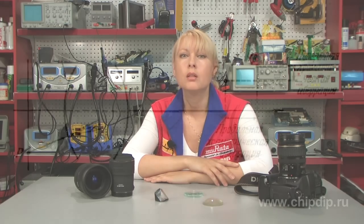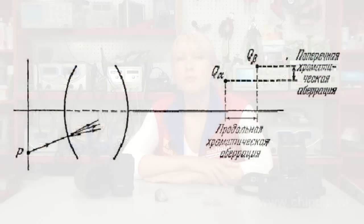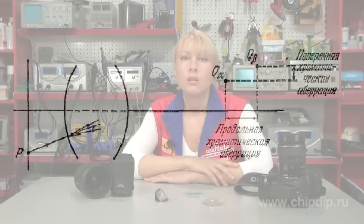There are two types of chromatic aberration. In longitudinal aberration, focuses from red to violet are distributed along the major axis. In lateral aberration, magnification changes depending on the wavelength and colored contours appear on the image.